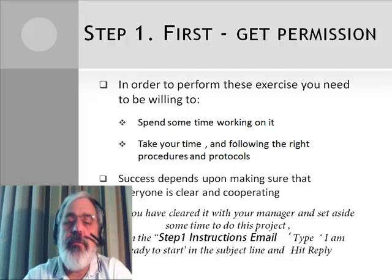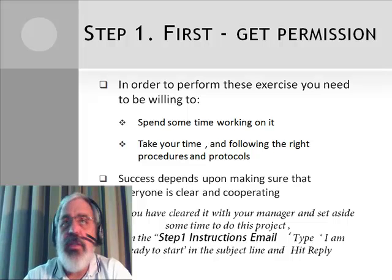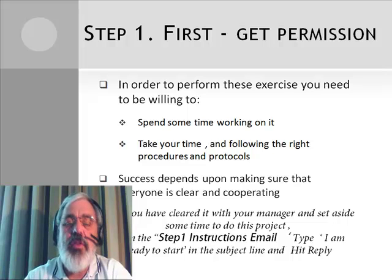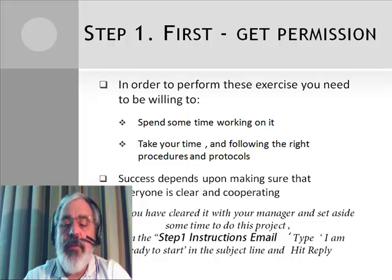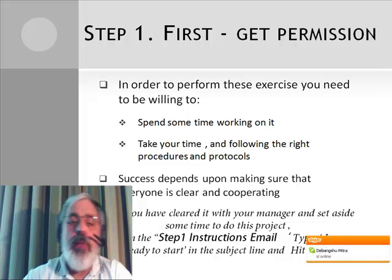First, get permission. In order to perform these exercises, you need to be willing to spend some time working on it, and you need your manager to agree. Not only does he have to agree to the time you're going to spend, but he has to agree to help you set up and get the relationships established in the network area. Your success depends on making sure that everyone's clear and cooperating from the outset. After you've cleared it with your manager and set aside some time to do the project, open the Step 1 instruction email, type 'I'm ready to start' in the subject line, and hit reply.